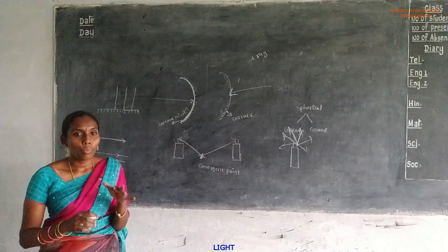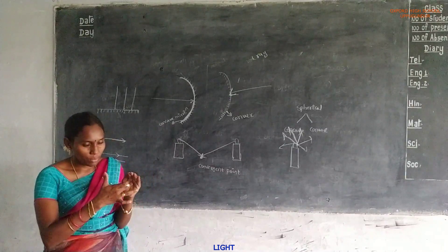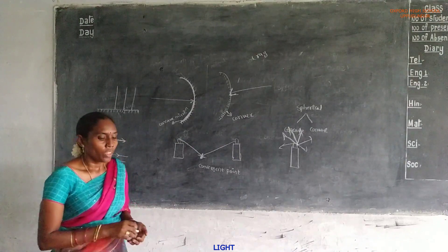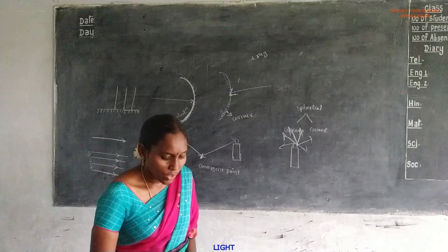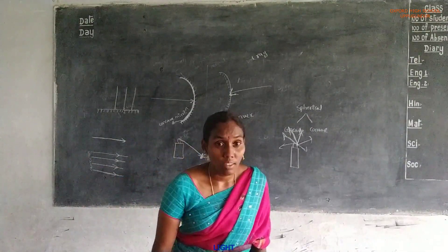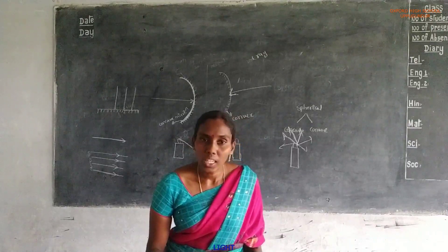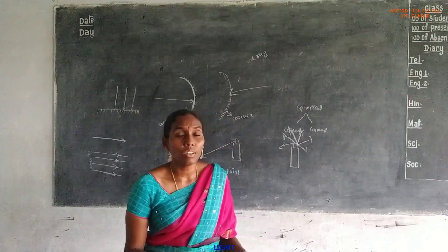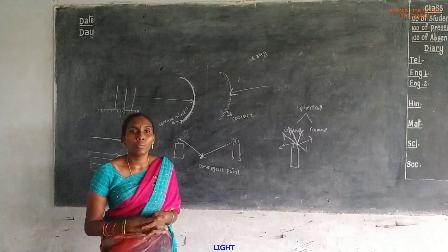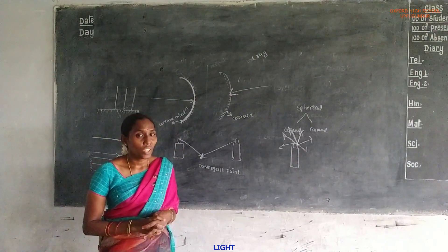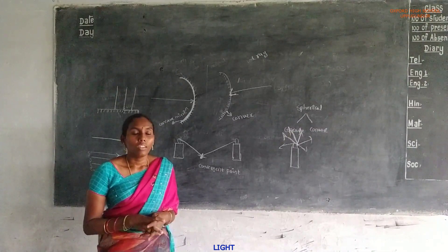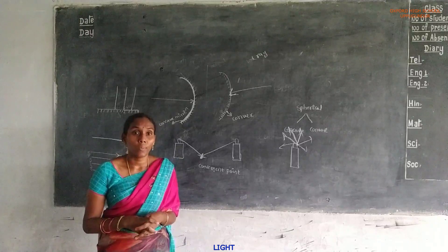Convex and concave are both bent surfaces. Hollow surface means concave. Bulged out surface means convex. We use concave and convex mirrors in real-life activities. For example, the headlights of a car are made using a concave mirror, because a concave mirror always produces a parallel beam of light. That is why in car headlights we use a concave mirror.